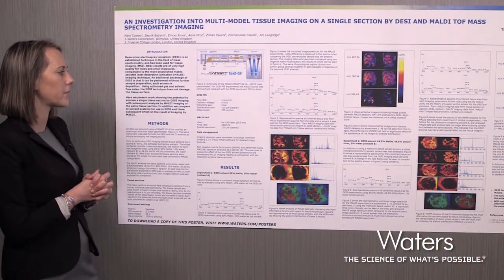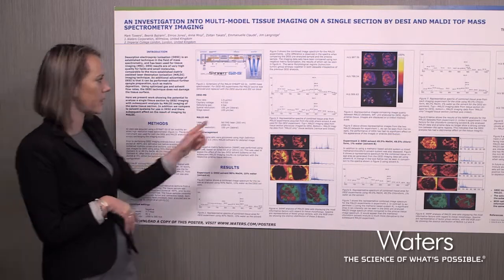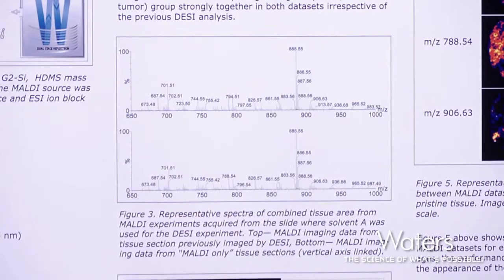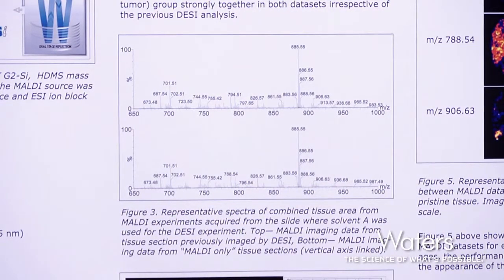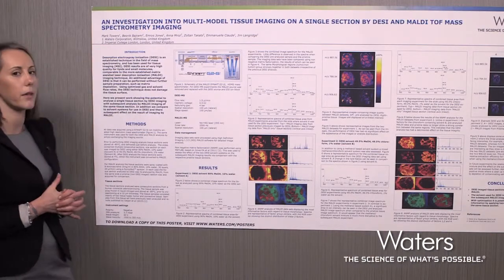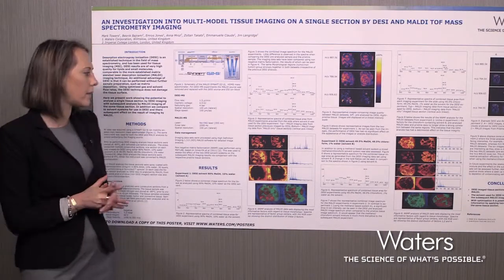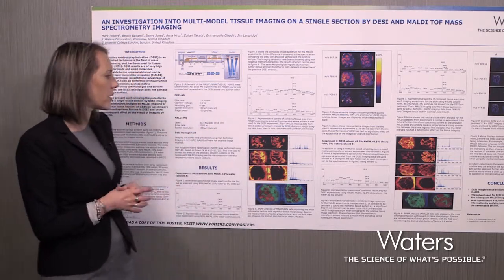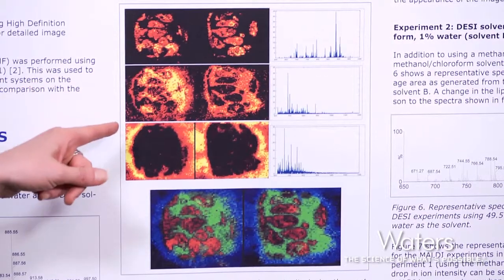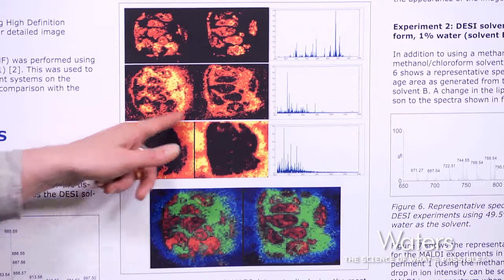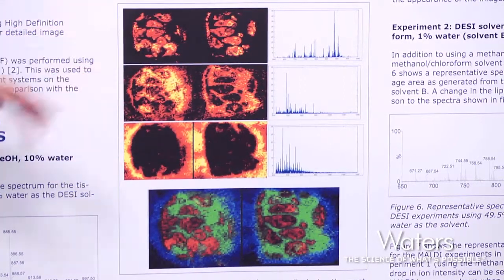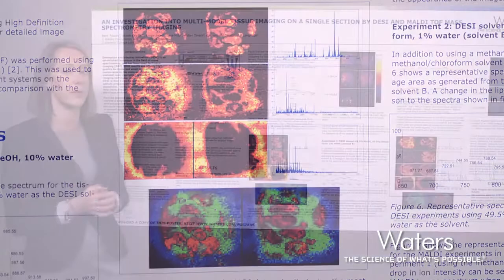When we used the 90% methanol, we can see in figure 3 that the spectra from the two datasets are very comparable. We also ran statistical analysis on these datasets using non-negative matrix factorisation, and the results are displayed in figure 4. We used three different factors: one displaying ions intense outside the tissue section, and two describing different cell types found within the tissue section.